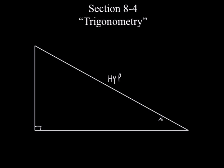It all depends on which angle we're dealing with. Let's deal with this angle down here. I'm going to put a Greek letter here — it looks like an O with a little swoosh through it. This is a Greek letter called theta, T-H-E-T-A. It's kind of a universal variable to represent an unknown angle. A lot of times when we have an unknown angle, they'll use this Greek letter and call it theta.